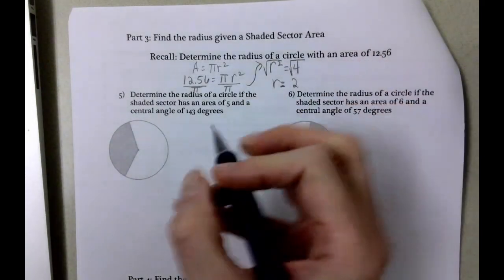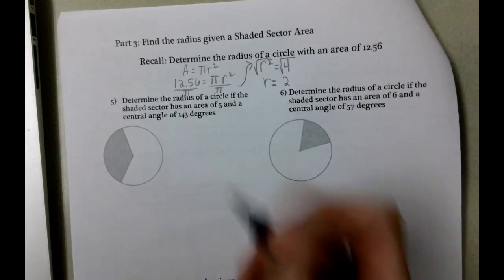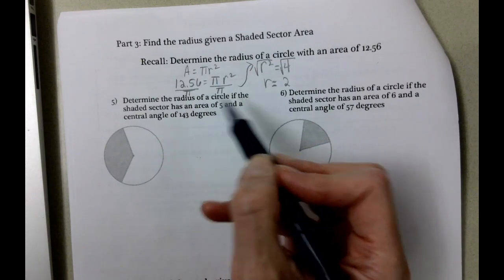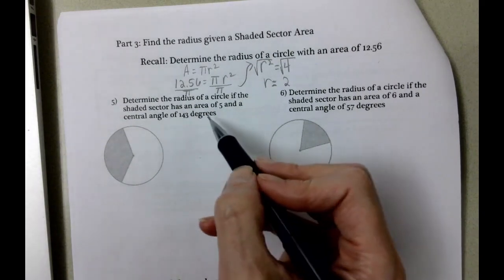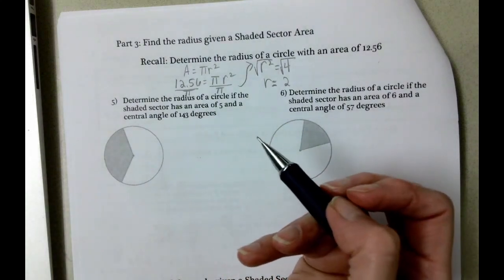We're doing the same thing when we get to here. What happens is we're going to fill in what we know. It says determine the radius of the circle if the shaded sector has an area of 5 and the central angle is 143 degrees.